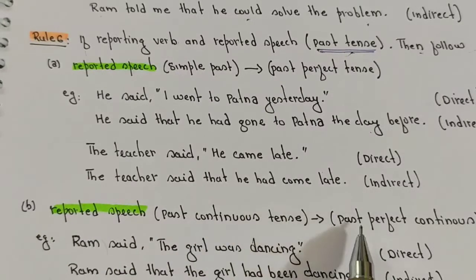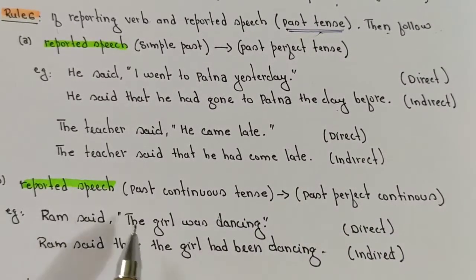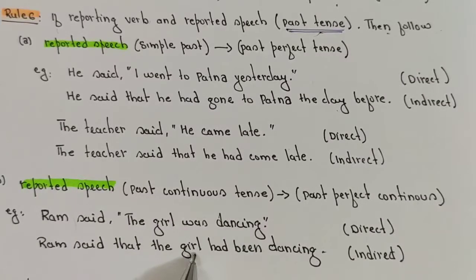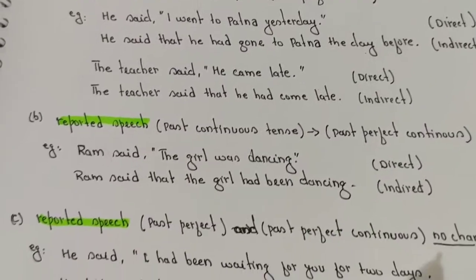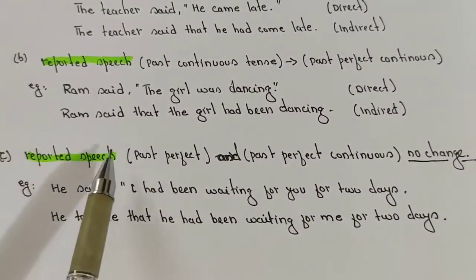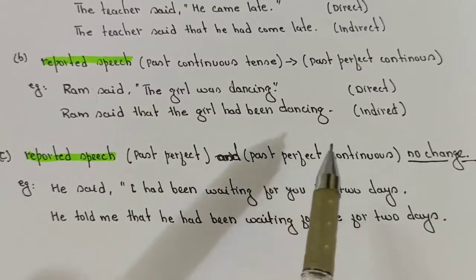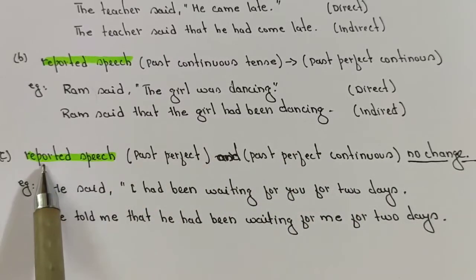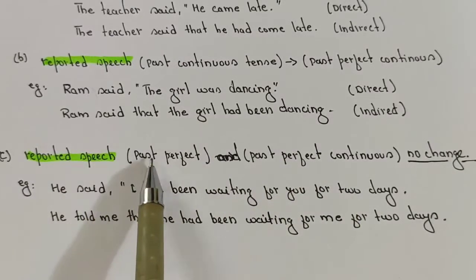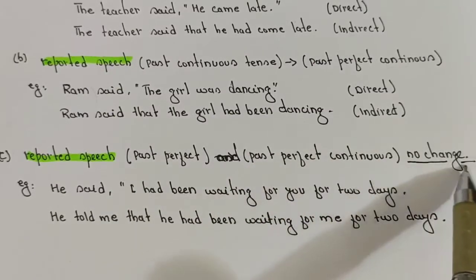Second condition: if the reported speech is in past continuous tense, it changes into past perfect continuous. Example: 'He said, the girl was dancing' becomes 'Ram said that the girl had been dancing' — past perfect continuous.